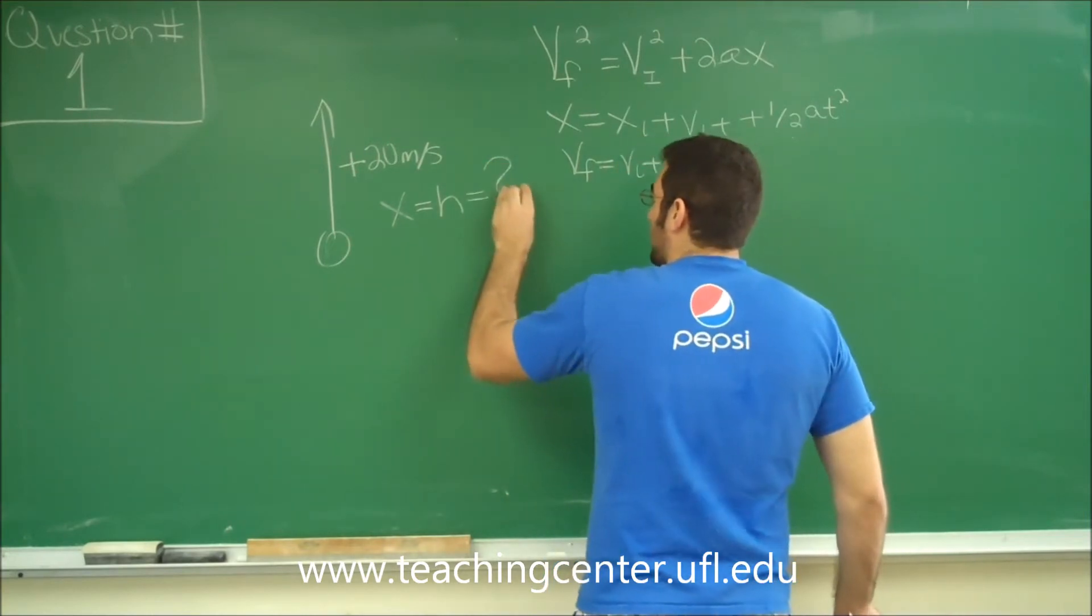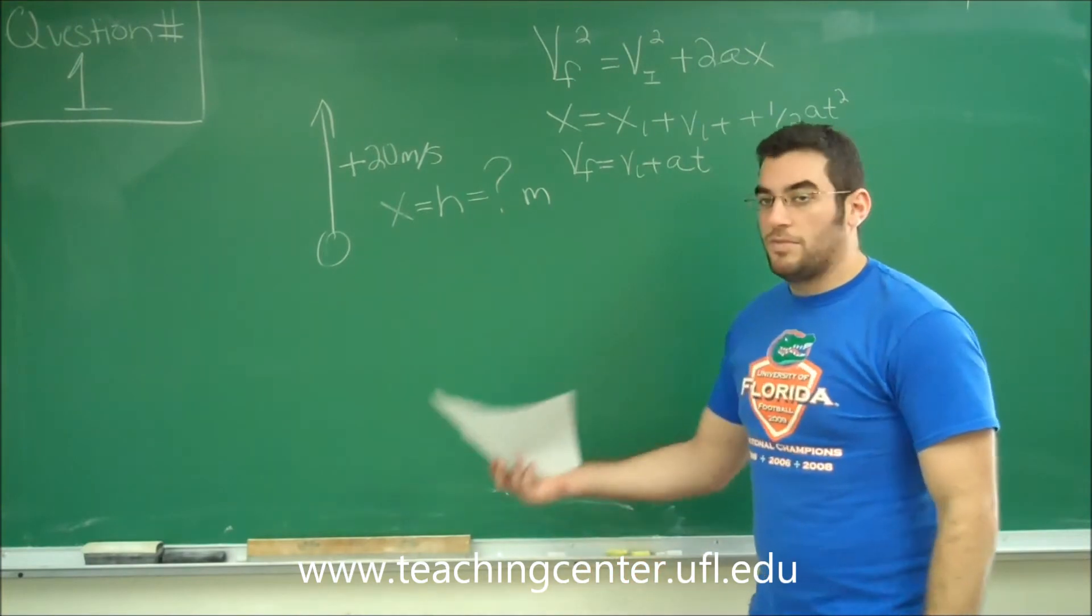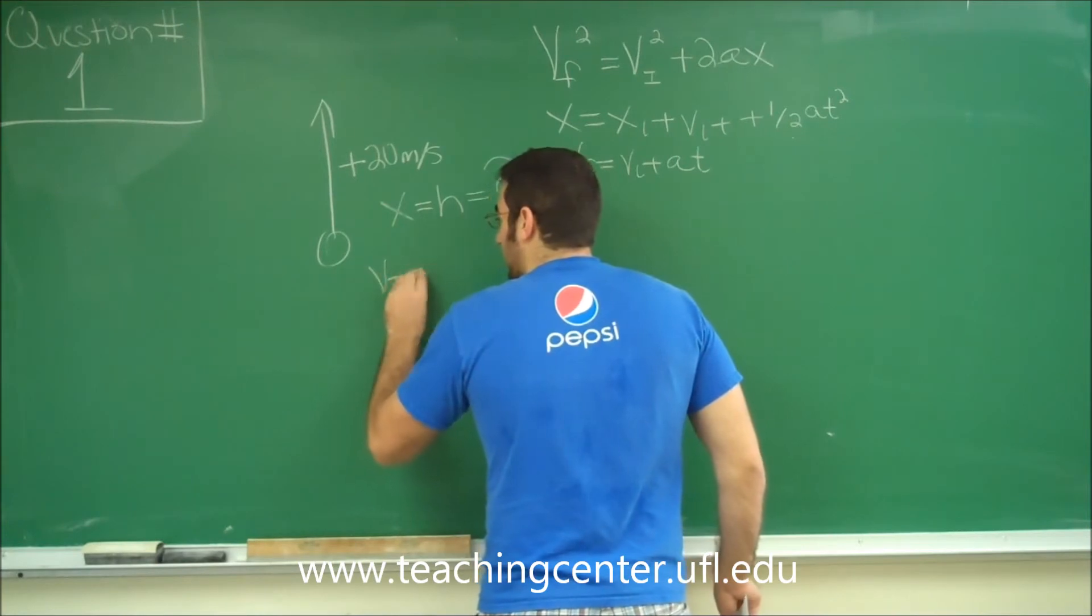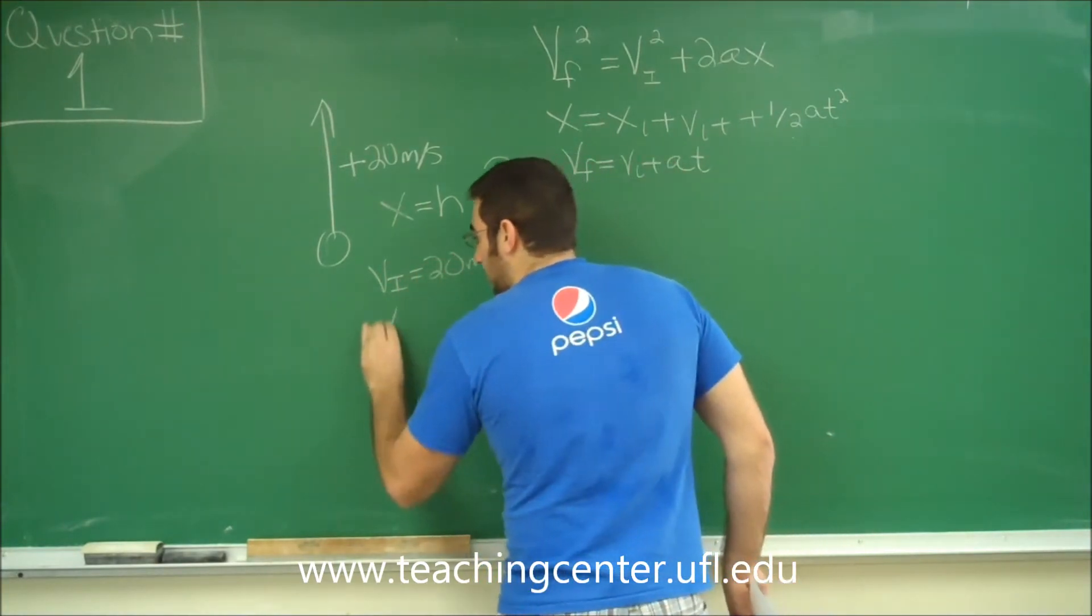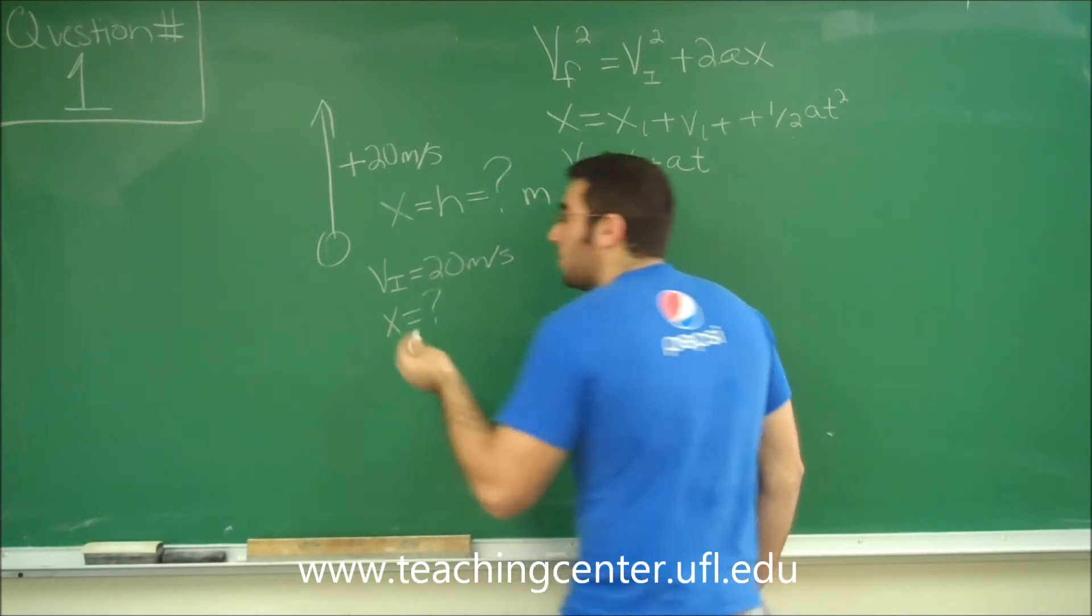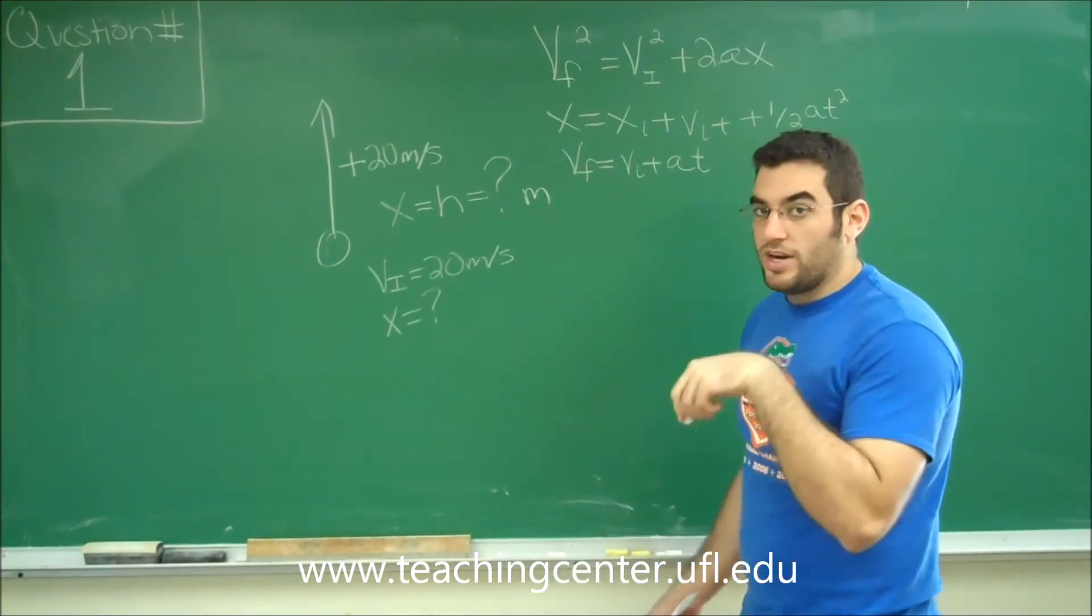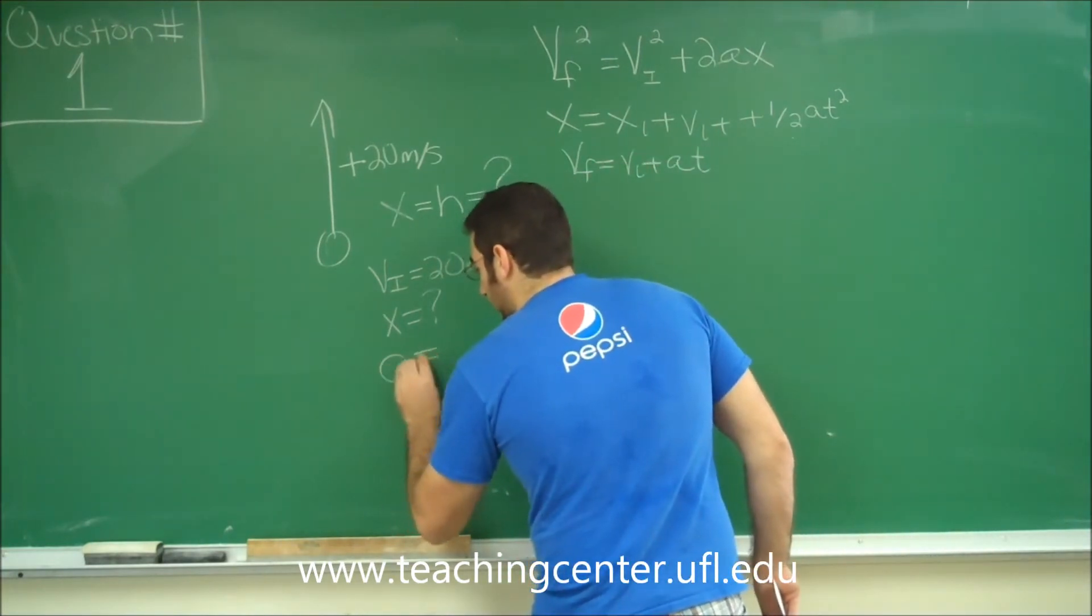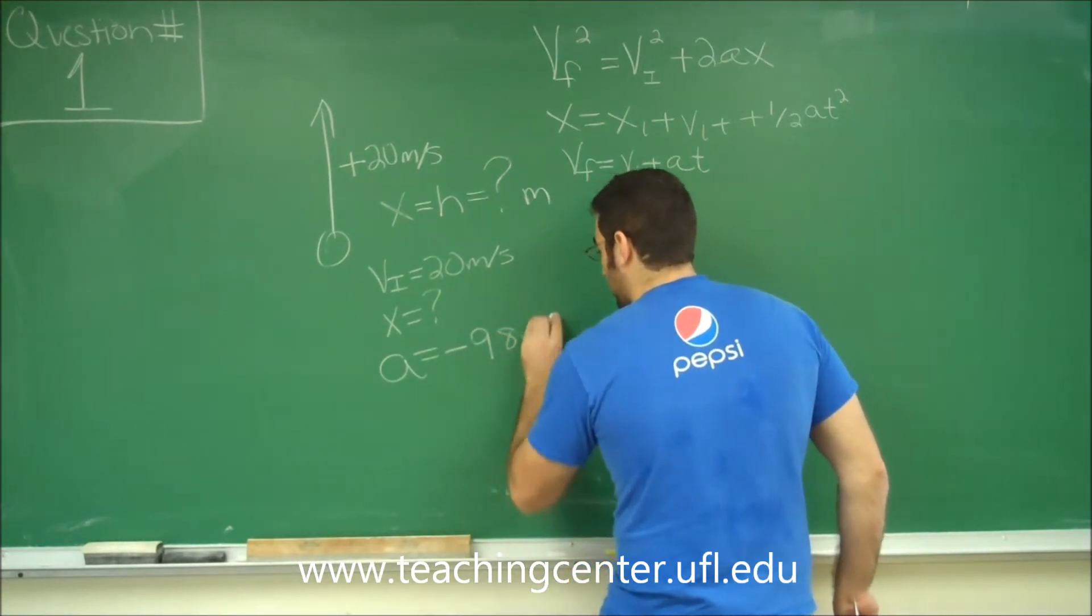So we want to know everything that we have already. So we know that we have an initial velocity of 20 meters per second. We are looking for a distance. We know because we're throwing something in the y direction that our acceleration is always gravity. So we have to assume this right off the bat. And gravity is negative 9.8 meters per second squared.